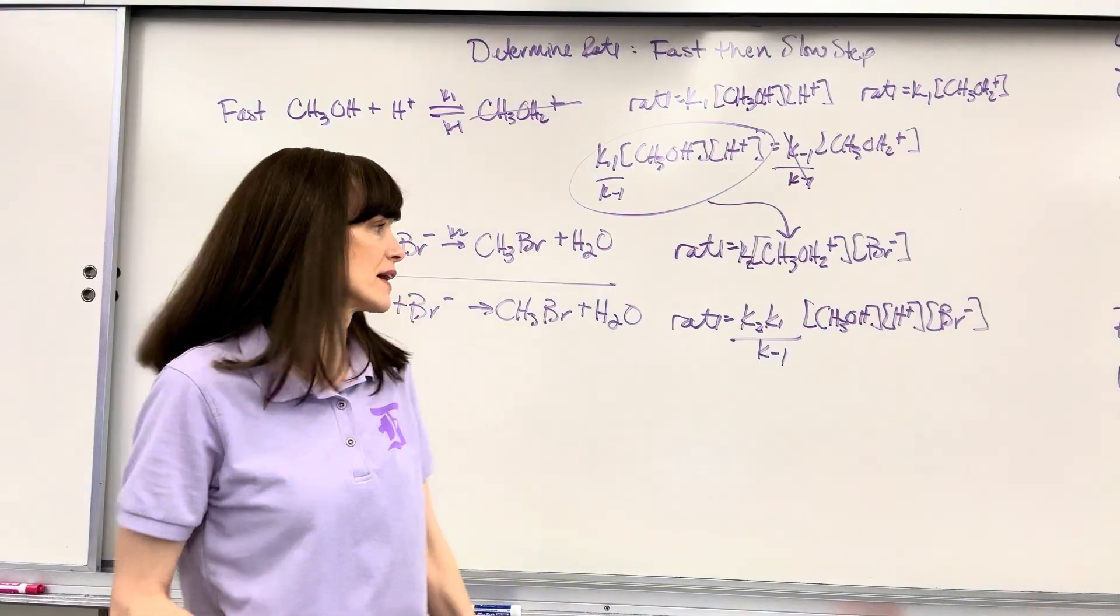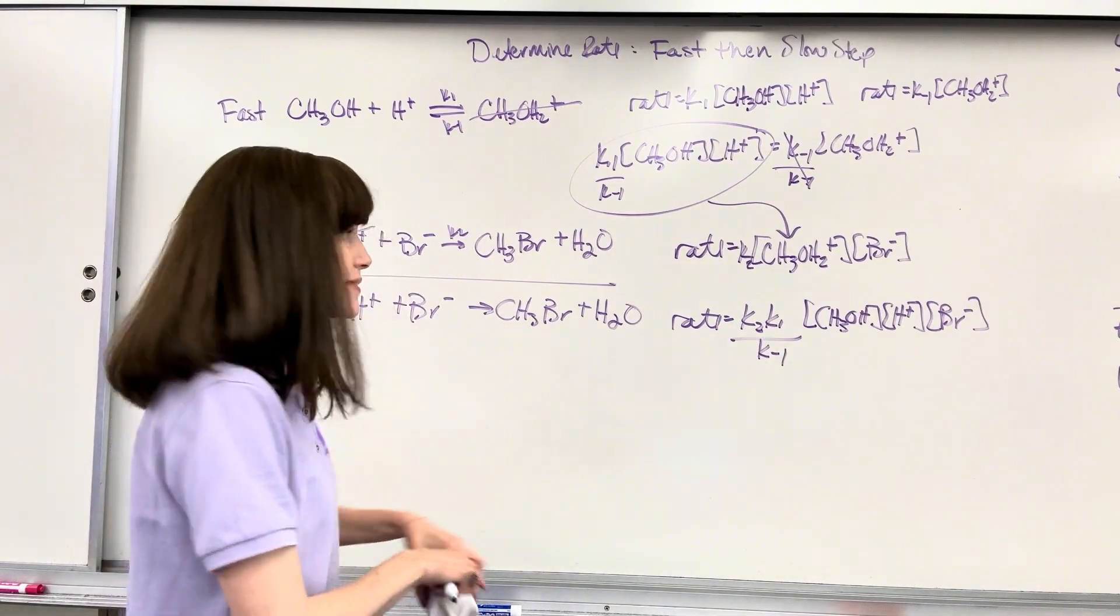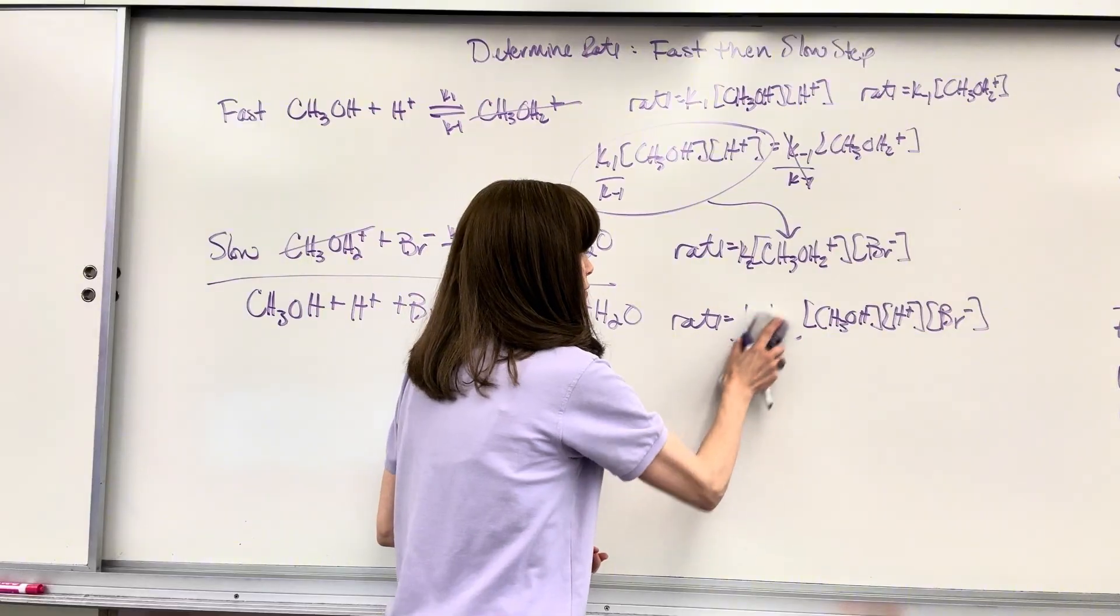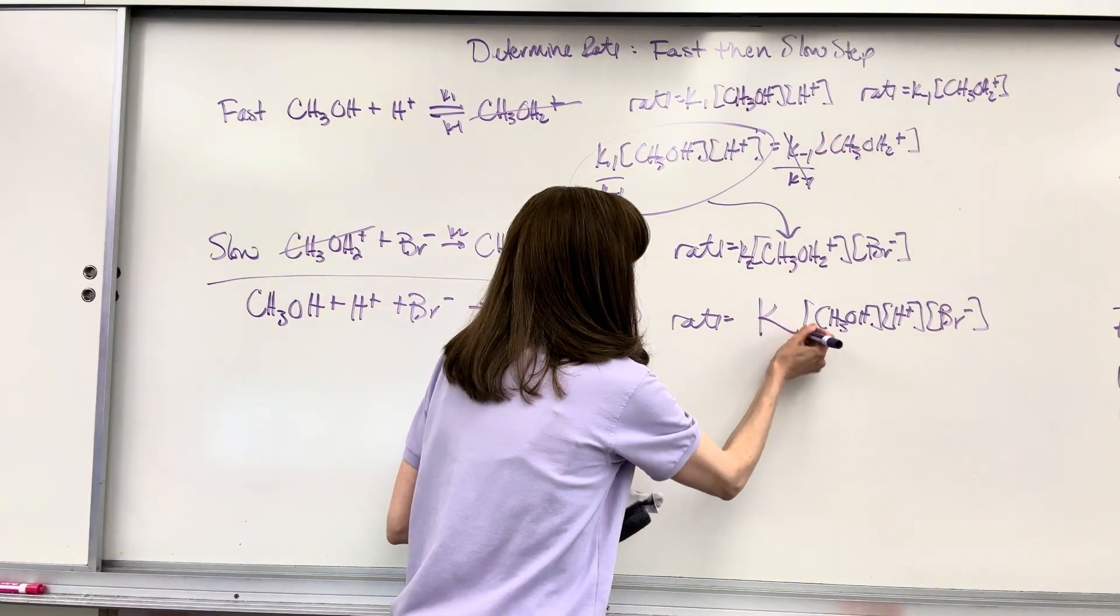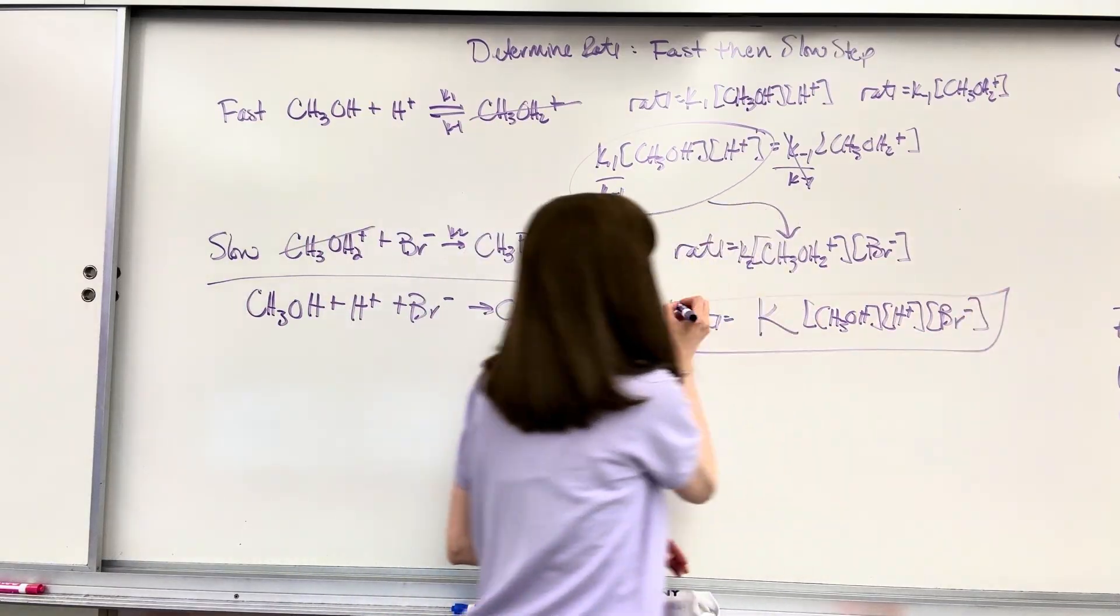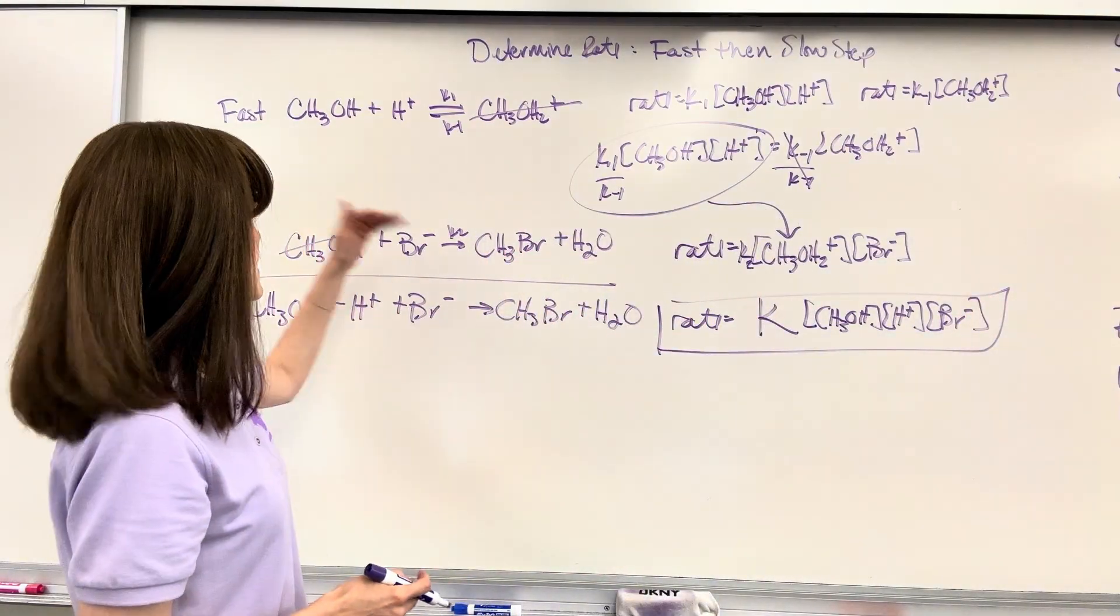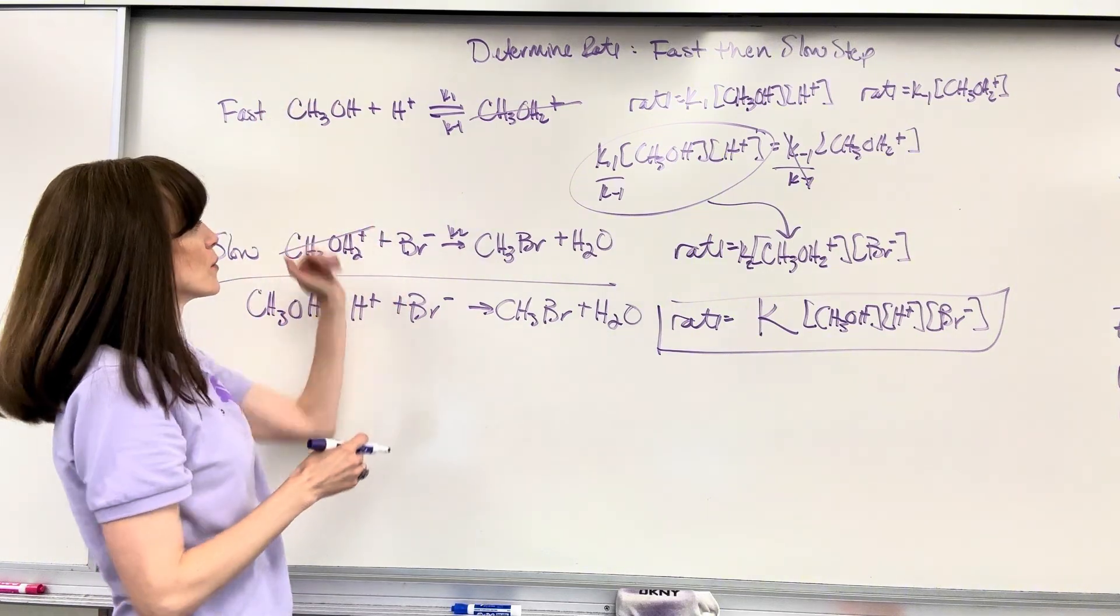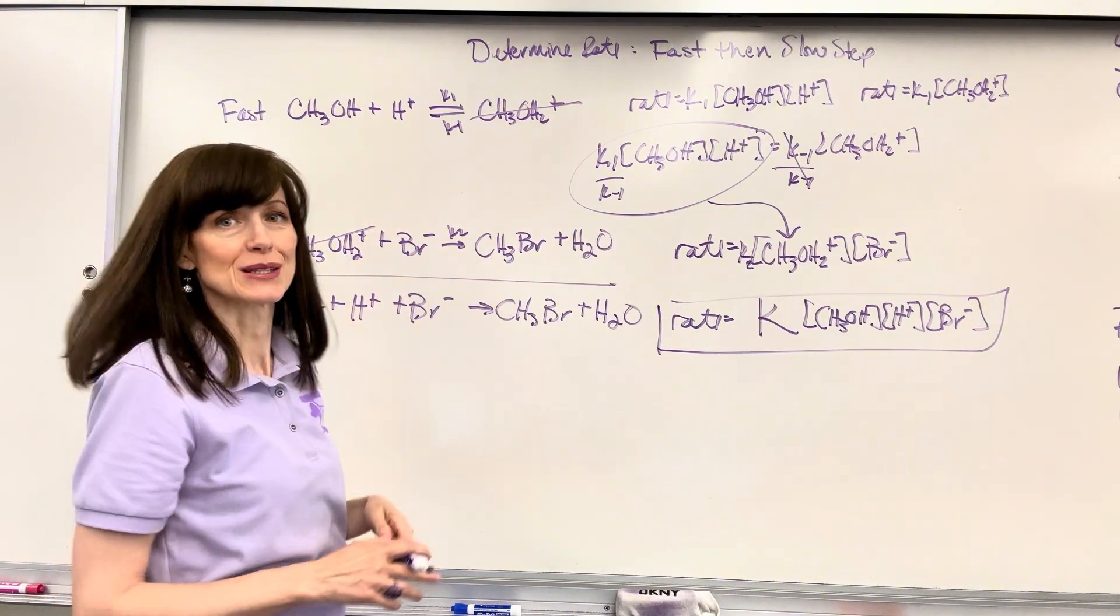Cleaning this up at the very end, I can just change K2 times K1 divided by K-1. That is simply K. Wonderful. And we have the rate law for this overall reaction using our reaction mechanisms, fast then slow.